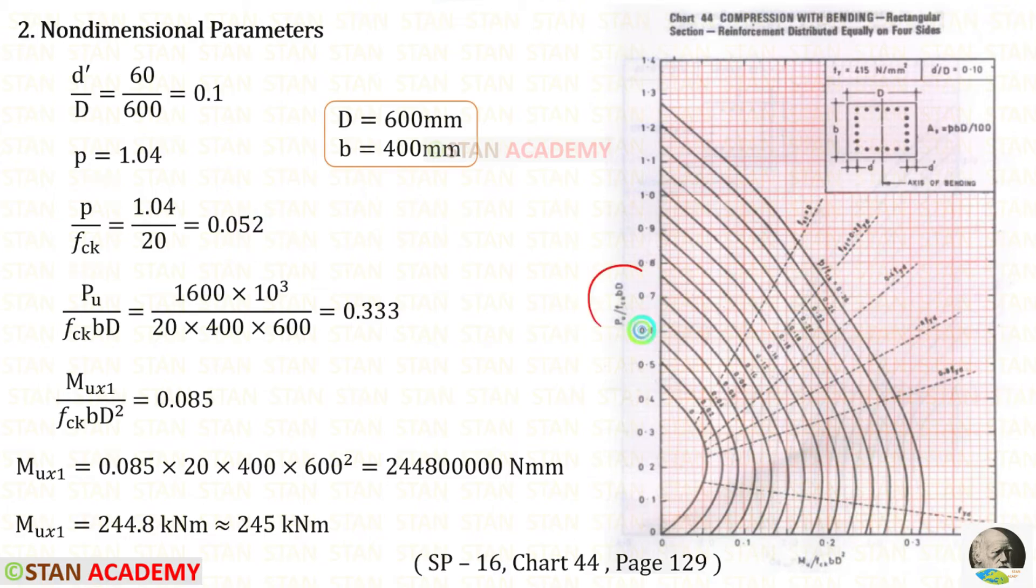Let us find p upon fck. We will get 0.052. From the chart, we can write these two terms. Only one difference is, here it is written as mu, but here it will be Mux1. For Pu upon fck·b·D, we will get 0.333. This is 0.3, this is 0.32, this is 0.34. 0.333 comes between 0.32 and 0.34. So, in between we have to make a line.